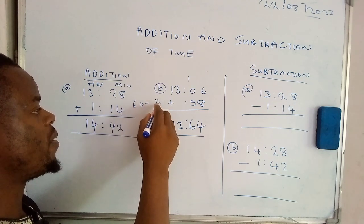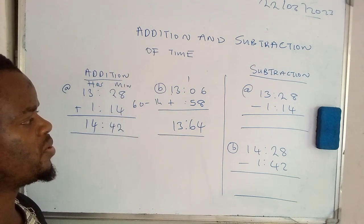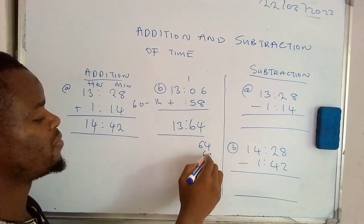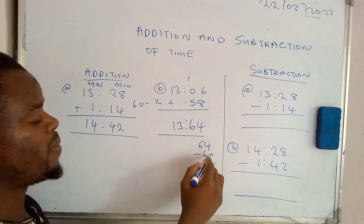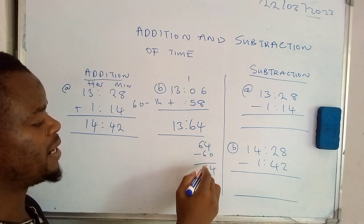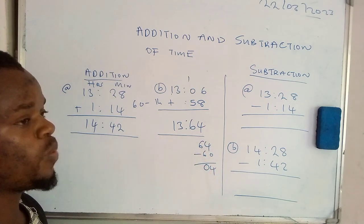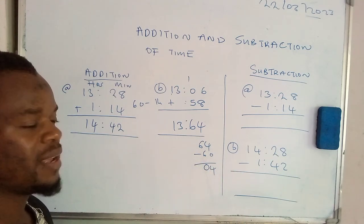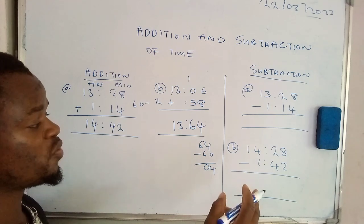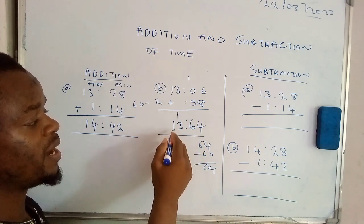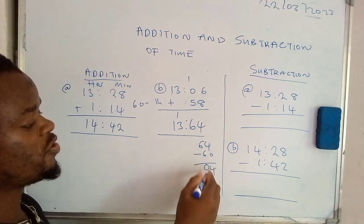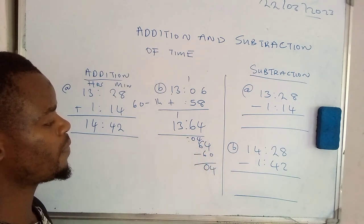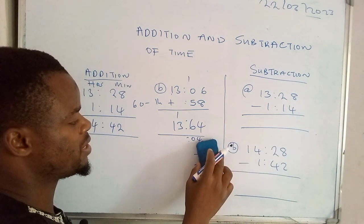But we need to remember that 60 minutes equals one hour. So what we're going to do is subtract 60 minutes from 64. So 4 minus 0, that's 4. 6 minus 6, that's 0. So when we take away that, we subtract 60 minutes which equal to one hour.